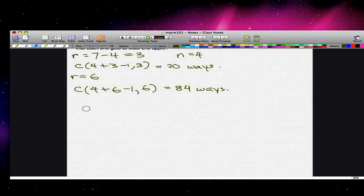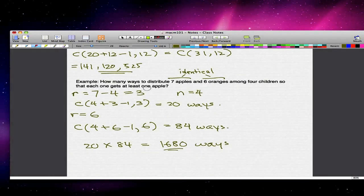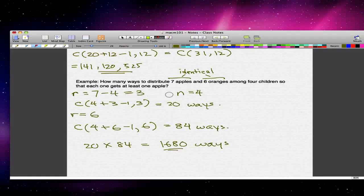Therefore, using the rule of product, which we looked through in one of my past videos, there are 20 times 84 ways or 1,680 ways to distribute the fruit under the stated conditions. So what we did here to recap is we distributed one apple to each child first to take care of this condition that each child gets at least one apple. So we take 7 minus 4 to get 3 apples. After that, with 4 children, we used the formula to find how many ways to distribute the apples among the children, so we got 20 ways. And after that, we used the 6 oranges and we used the formula again to get 84 ways to distribute the oranges. We times them together to get the number of different ways to distribute apples and oranges under the stated conditions.